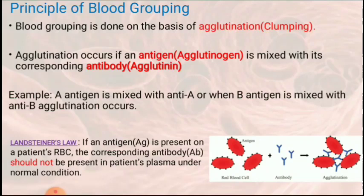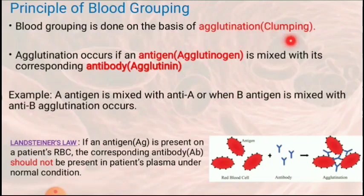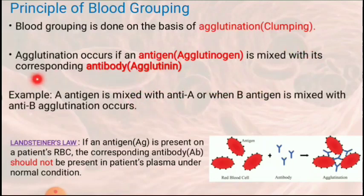Now let us see the principle behind blood grouping — on what basis are the blood groups being classified. Karl Landsteiner observed that when blood is transferred from one person to another, it leads to clumping of blood. He named this clumping as agglutination, also known as clotting of blood. This clotting takes place because of two factors present in our blood: antigen and antibody. There are two types of antibodies — antibody A and antibody B — and two types of antigens present in our RBC — antigen A and antigen B.